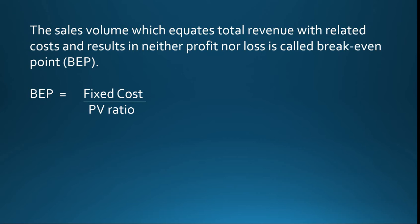Next is BEP. What is BEP? We already discussed that break-even point is a position where the company earns no profit, no loss — meaning cost equals total revenue. The sales volume which equates total revenue with related cost, resulting in neither profit nor loss, is called the break-even point. To calculate the break-even point, the formula is: BEP = Fixed Cost divided by PV Ratio.